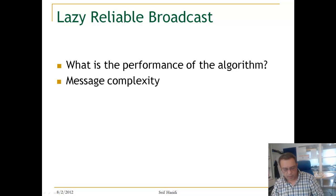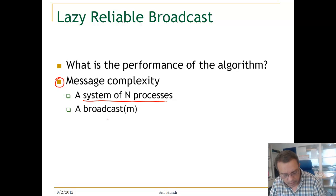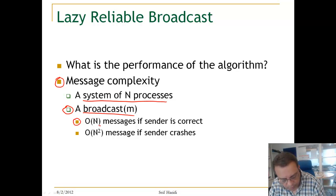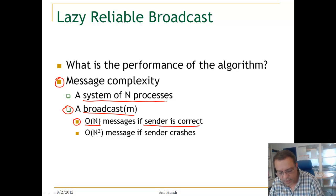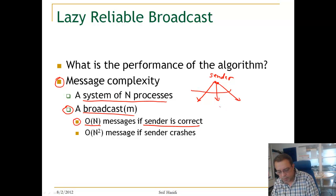What is the performance of the algorithm? We look at the message complexity. In a system of n processes, if you do a broadcast of a message m, the number of messages in the system will be in the order of n if the sender is correct. You can see this — the sender simply sends a message to everybody else. If the sender is correct, that's it. So this will be the number of processes in the system, which is n.